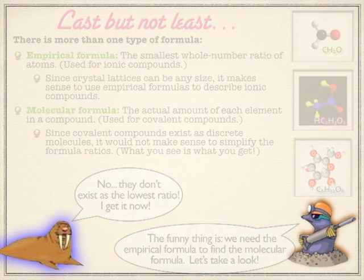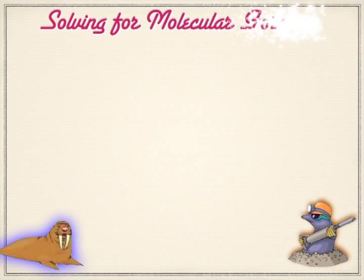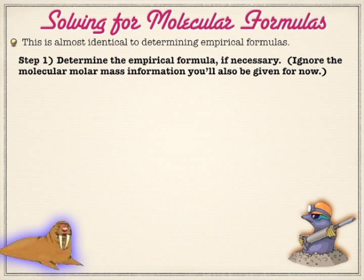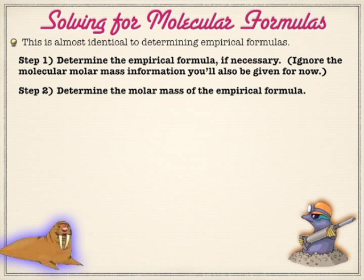So how do we deal with this? We're looking at mainly the same process as determining empirical formulas. The key distinguishing feature is that these problems have to give you a molar mass of the actual compound, or a range around the molar mass. If they don't give you that, you can't determine the molecular formula. So that's a big red flag — you should definitely see one of those in a problem like this.